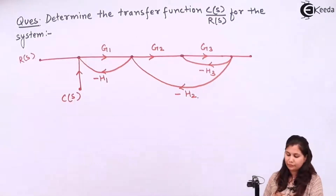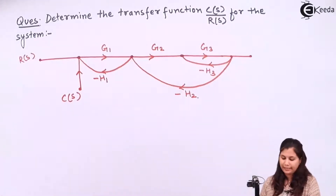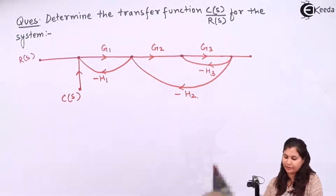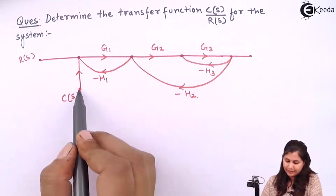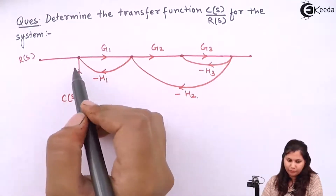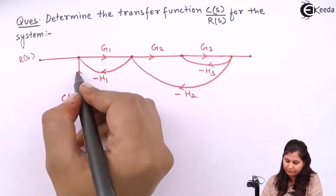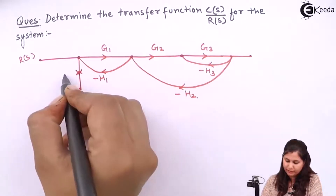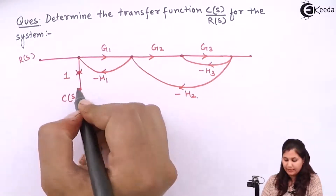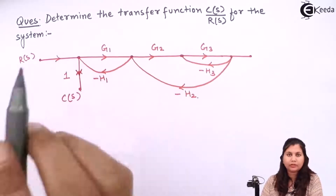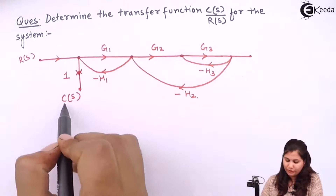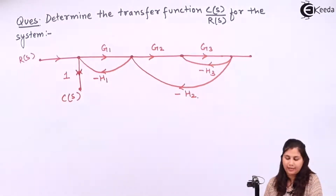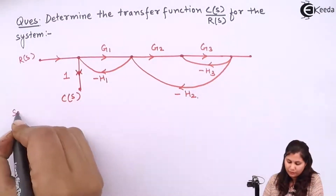So this is the signal flow graph of the system and for this system we have to find out the transfer function, that is the ratio of C(s) by R(s). C(s) is the output and R(s) is the input. So we have to find out the ratio of C(s) by R(s). Now let's solve this problem.